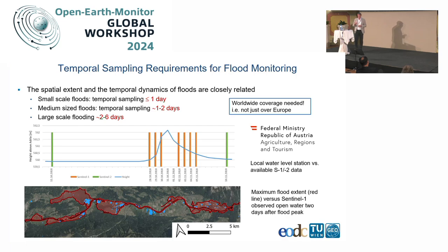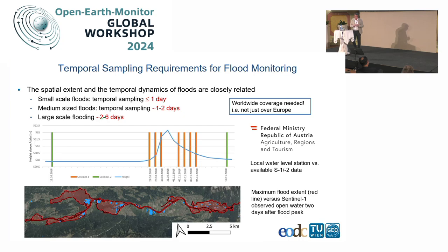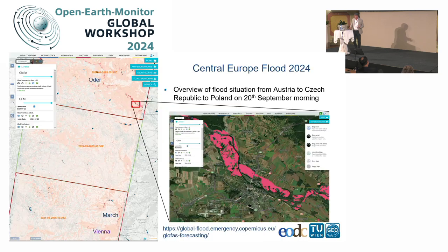When asked to define requirements for Sentinel-1 next generation, I said: for small-scale flooding events we need temporal sampling of less than a day; for median-scale floods, one to two days; for large-scale flooding, two to six days. Looking back, I think that wasn't bad advice, but with the recent Austrian flood I would push requirements even further — we would like many more images. With only one Sentinel-1 satellite flying right now we often waited quite a long time for the next image.